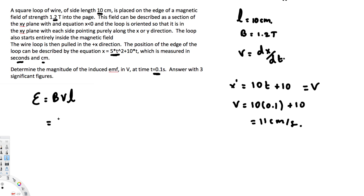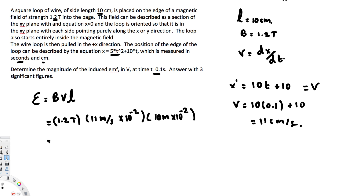Now we plug into EMF = BvL: B = 1.2 tesla, v = 11 cm/s = 11 × 10⁻² m/s, and L = 10 cm = 10 × 10⁻² m. Calculating: 1.2 × 11 × 10 = 132, and 10⁻² × 10⁻² = 10⁻⁴, giving 132 × 10⁻⁴ = 0.0132 volts. That's the final answer. I hope this helps, thanks for watching.